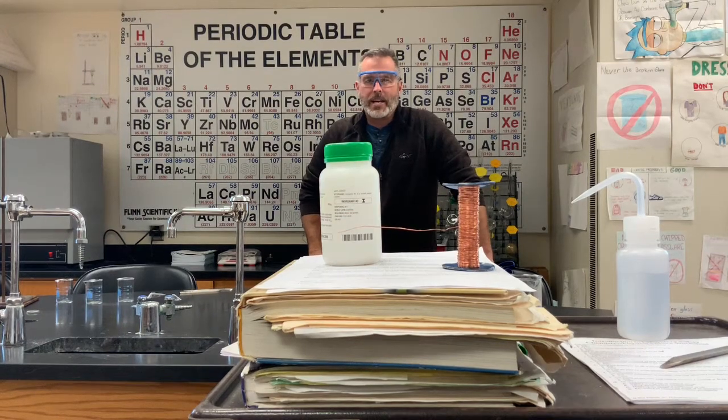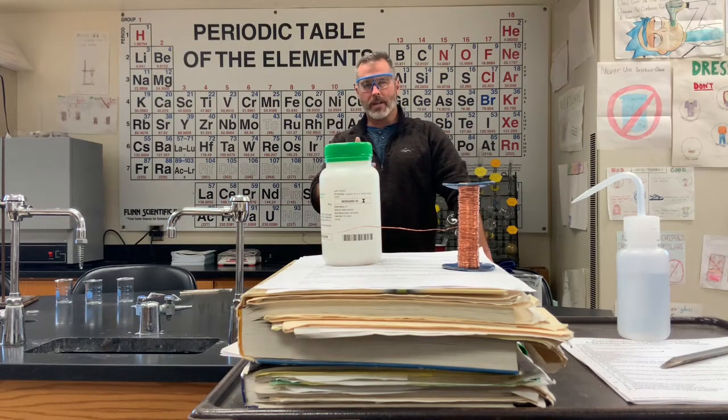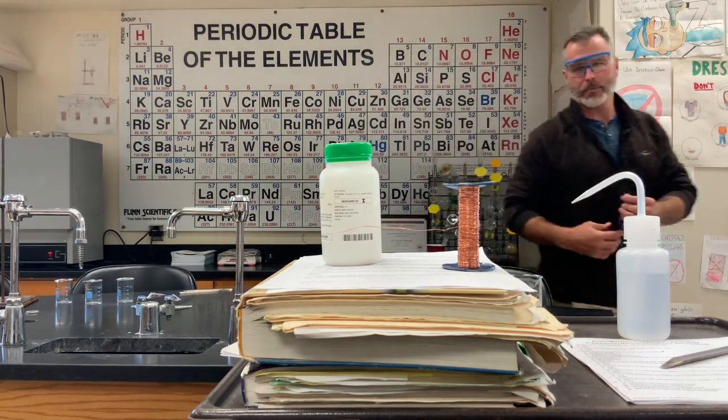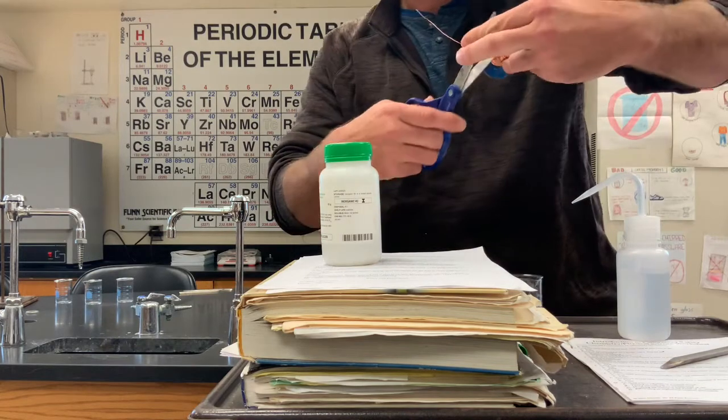Alright guys, we're going to go over some reaction types today. The first one we're going to have here is copper wire and silver nitrate. So I'm going to come up here and prepare the copper.